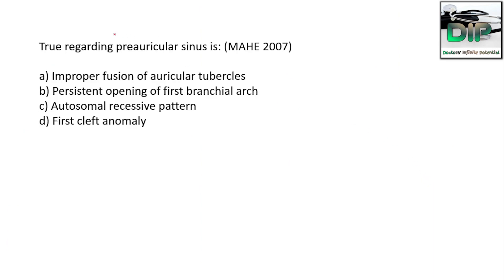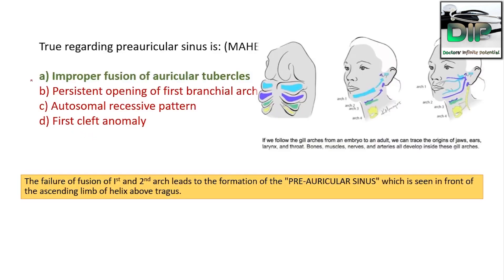Next question: What is true regarding the preauricular sinus? Option A: improper fusion of auricular tubercles; option B: persistent opening of the first branchial arc; option C: autosomal recessive pattern; option D: first cleft anomaly. The correct answer is A — improper fusion of auricular tubercles. The failure of fusion of the first and second arc leads to formation of the preauricular sinus, seen in front of the ascending limb of the helix, above the tragus.